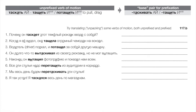«Все эти стулья надо перетащить из аудитории в коридор» — we need to drag all these chairs from the classroom into the hallway. «Мы весь день будем перетаскивать эти стулья» — imperfective, long time period: we're going to be dragging chairs from one place to another all day. And one more: я весь день таскалась по магазинам — I've been dragging myself around the stores all day.